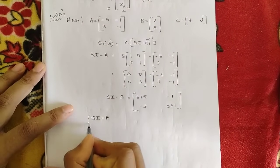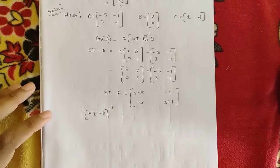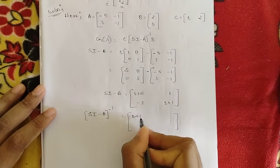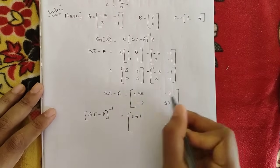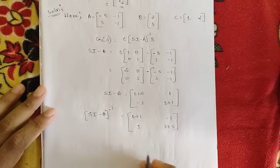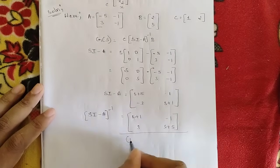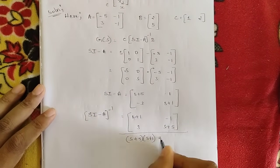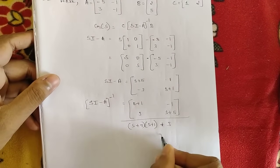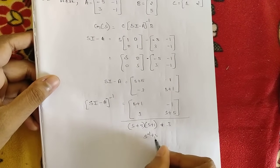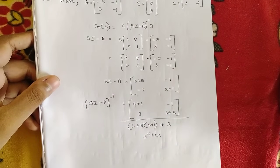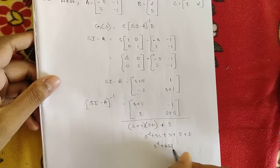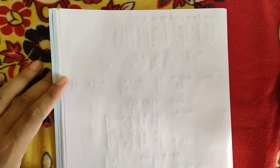Find (sI - A)⁻¹ = adjoint(sI - A) / determinant(sI - A). Adjoint: interchange diagonals and change signs of off-diagonal elements → [s+1, -1; 3, s+5]. Determinant = (s+5)(s+1) - (-1)(3) = s² + 6s + 5 + 3 = s² + 6s + 8.